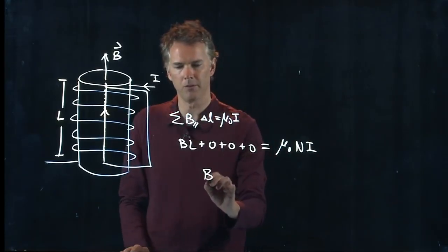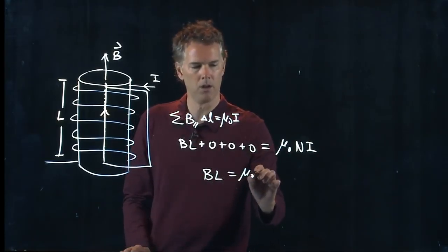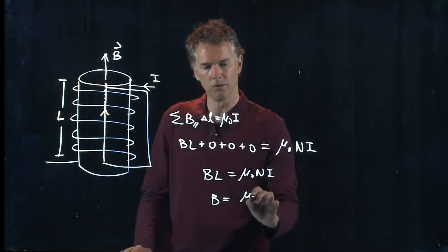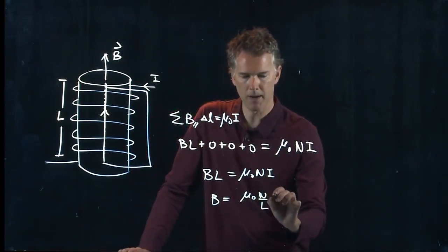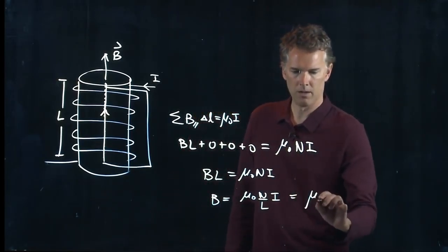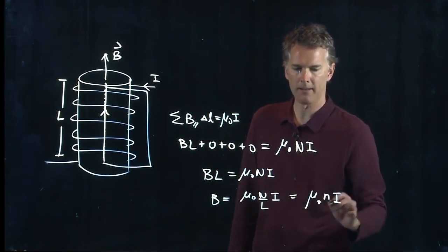And so now look what this simplifies to. B·L equals μ₀NI or B equals μ₀N divided by L times I, which is exactly what we said a second ago. It's μ₀(N/L)I.